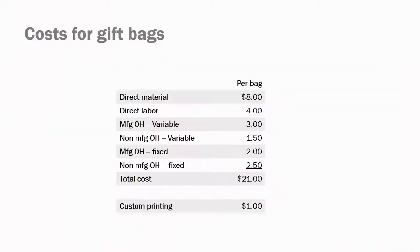Assume the same cost information as our previous your turn: direct material $8.00, direct labor $4.00, variable manufacturing overhead $3.00, variable selling cost $1.50, fixed manufacturing overhead $2.00, and fixed selling and administrative cost $2.50, for a total cost of $21.00. Additionally, the custom printing of the bag is variable at $1.00 per bag.